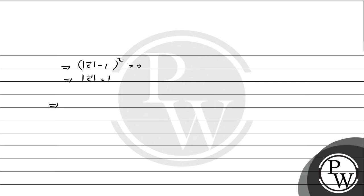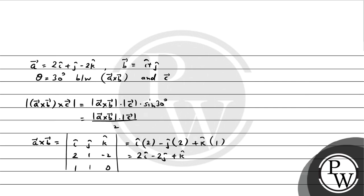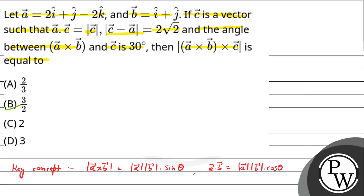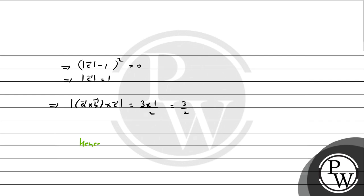So magnitude of c is 1. Now the answer we needed — magnitude of a cross b cross c — equals magnitude of a cross b (which is 3) times magnitude of c (which is 1) times 1/2, giving us 3/2. So the correct option is option B. Hope you have understood it well — best of luck!